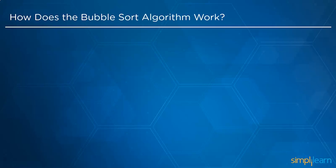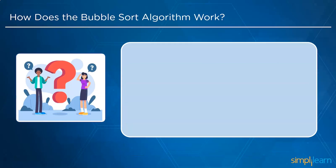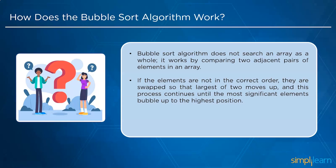The bubble sort algorithm does not get implemented on the entire array in one go. Instead, it compares two adjacent pairs of elements. If they are not in the correct order, they are swapped, so the largest of the two moves toward the right. This process continues until the most significant element is moved to the highest position. After the first pass, the search for the next most significant element starts, and swapping continues until the whole array is in correct order.